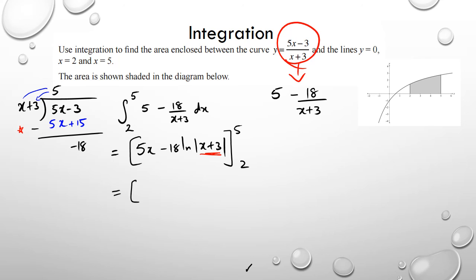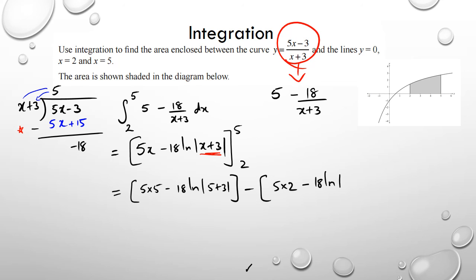Substituting the bounds: 5 times 5 minus 18 times ln(5 plus 3) minus [5 times 2 minus 18 ln(2 plus 3)]. Working that out gives approximately 6.54.